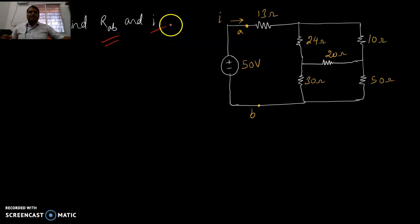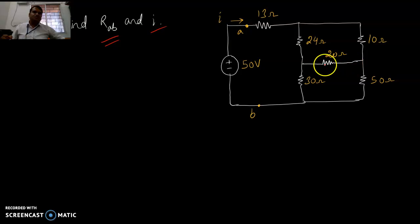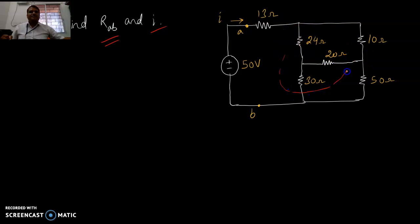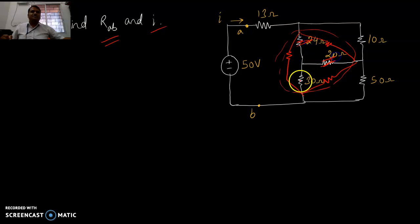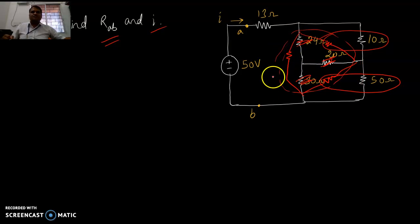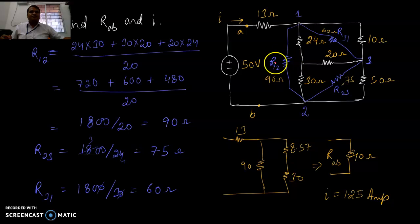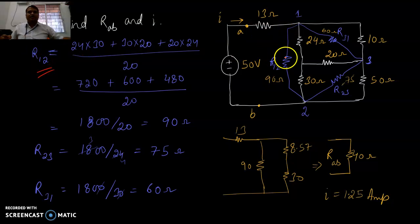Another problem: find R_AB and the current. This is a complex network — between two nodes there is a 20 ohm resistor, not a short circuit. You can identify a star connection and convert it to delta. Once converted to delta, this sub-network vanishes, and the remaining elements combine: in parallel, then in series. R12 is found by multiplying all terms and dividing by 20, giving R12 = 90 ohms.